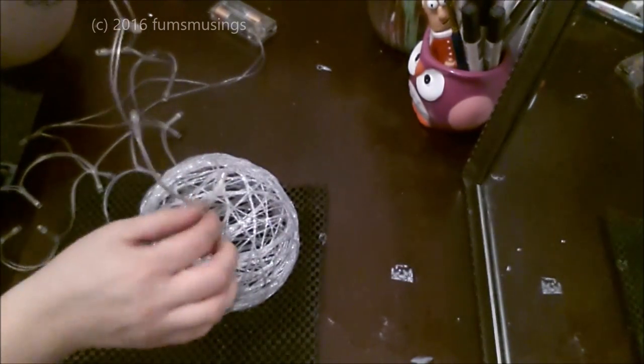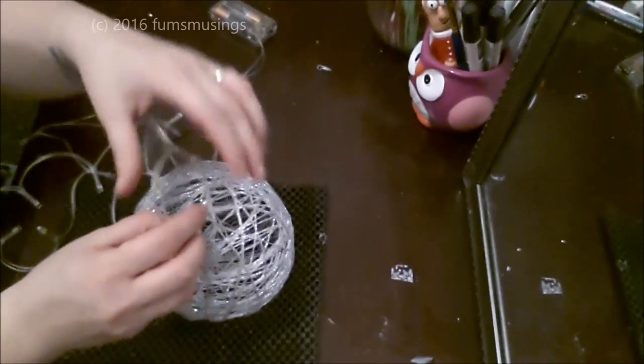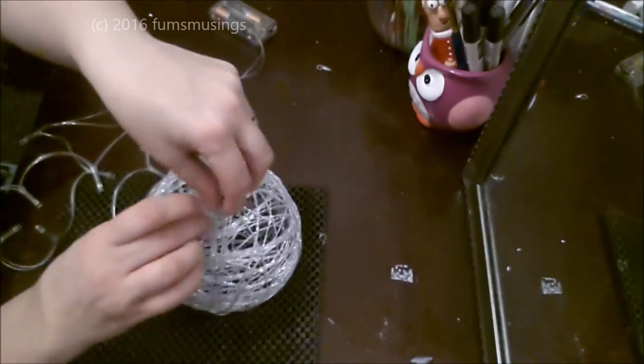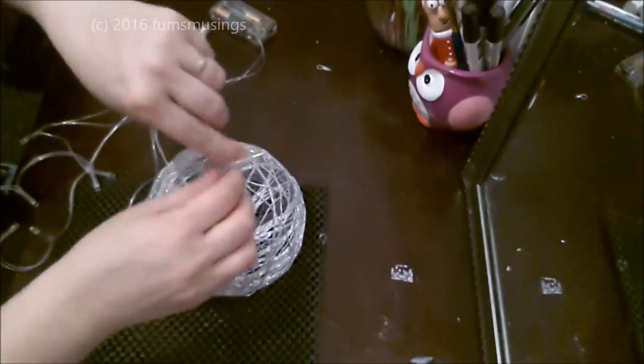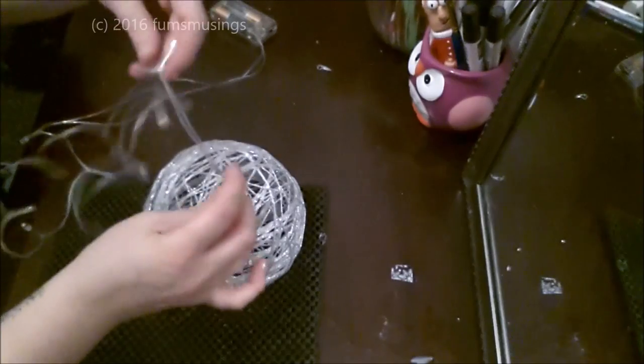Make a small hole in the bottom and place your fairy lights inside very carefully. You don't have to arrange them in a particular position or anything. Just feed them through into the inside of the string ball.